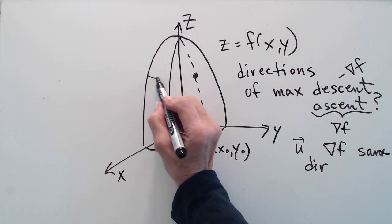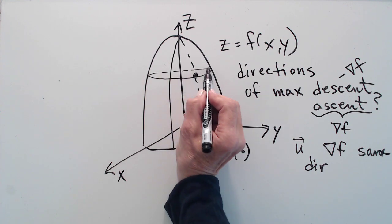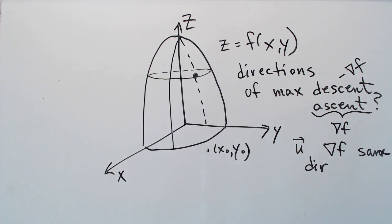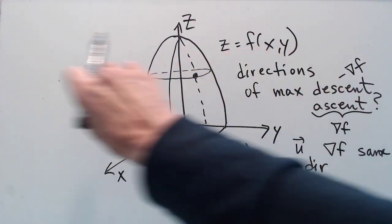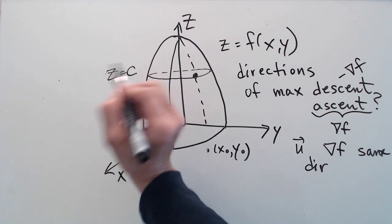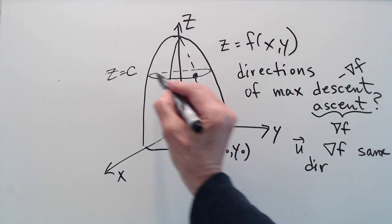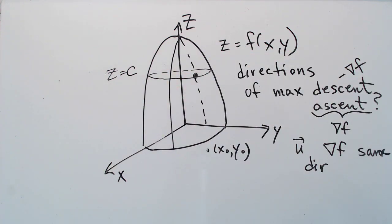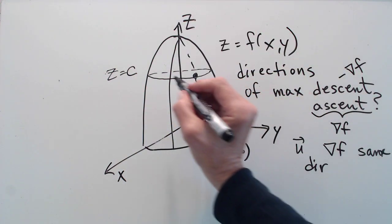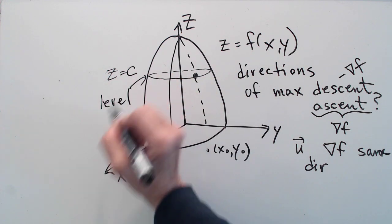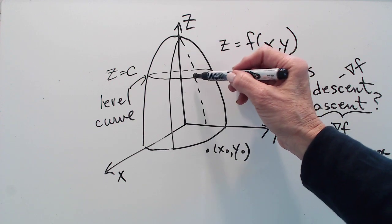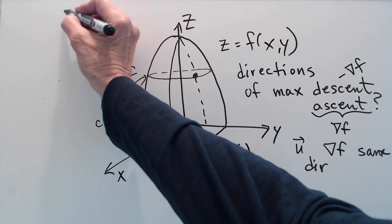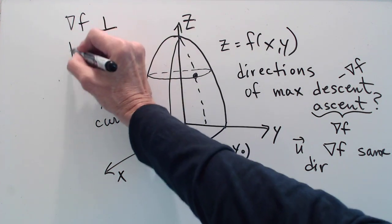One thing that I have not told you, it's a property of the gradient vector that's extremely important but due to budgetary constraints, we did not have time to prove this. If we slice through a surface with a plane where z is a constant, then what do we get? Well in this case it looks like we get a circle or an ellipse. This is called a level curve, and it is a fact that at any point the gradient vector is always perpendicular to level curves.